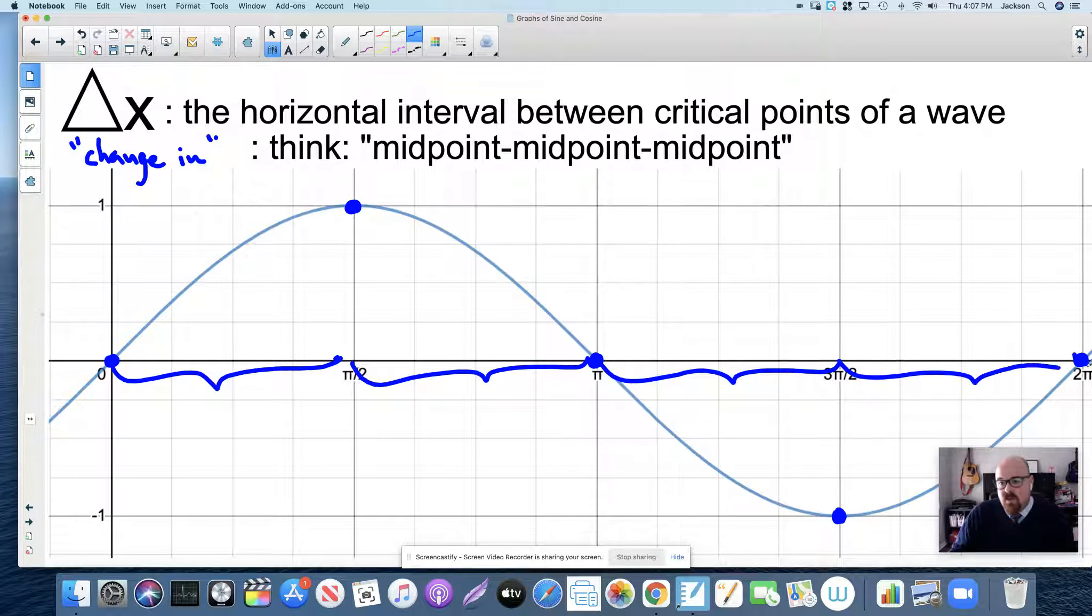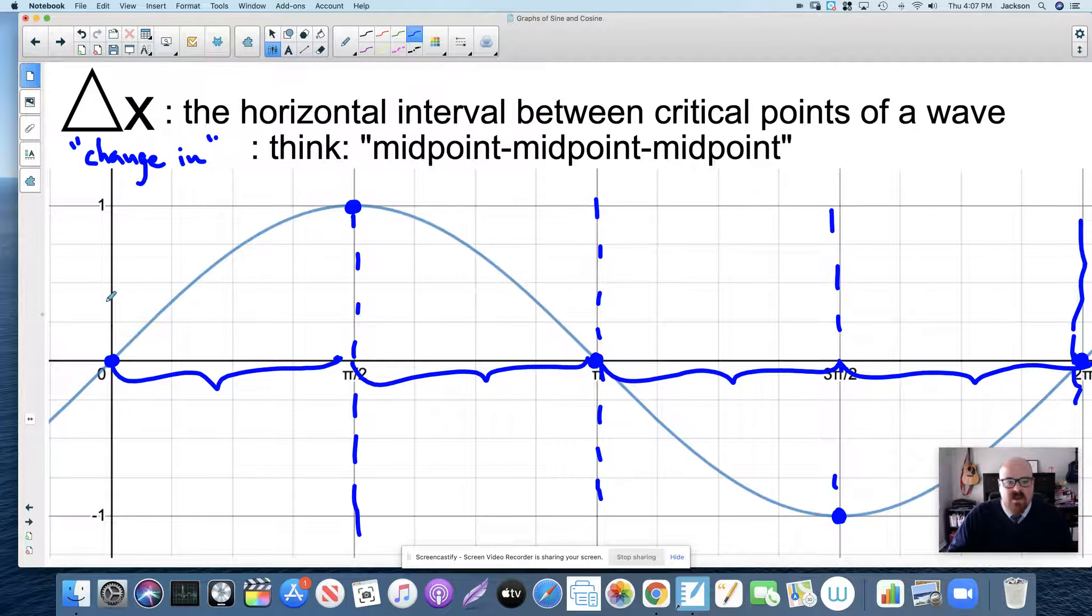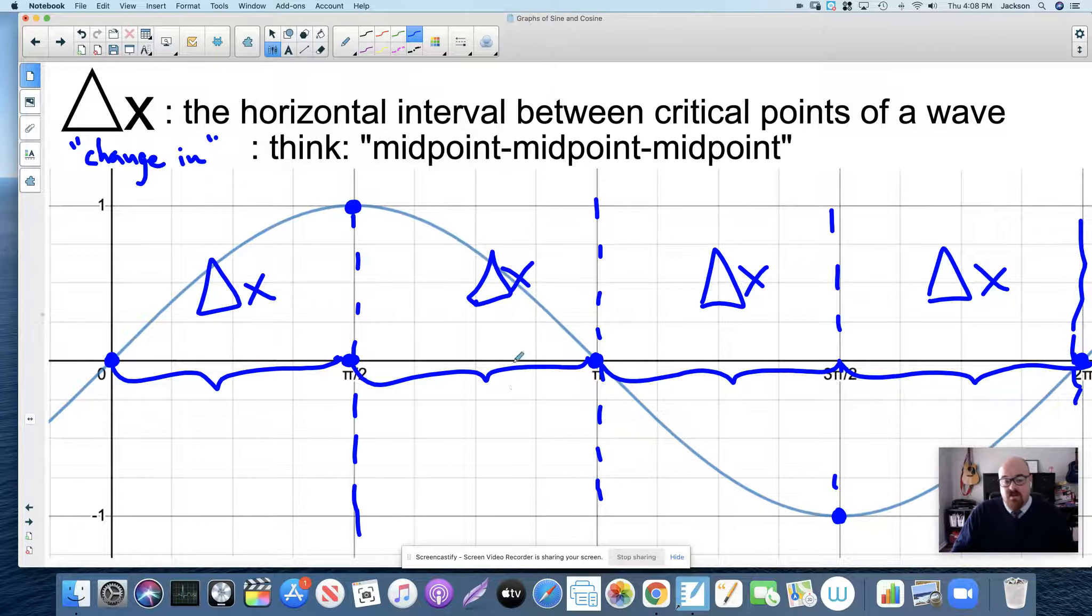What we have is the period, the entire period of the function chopped into four intervals. You can see here that each of these four intervals is the distance to the next critical point. This is what we call delta x, the horizontal interval from one critical point to the next, and that's constant.